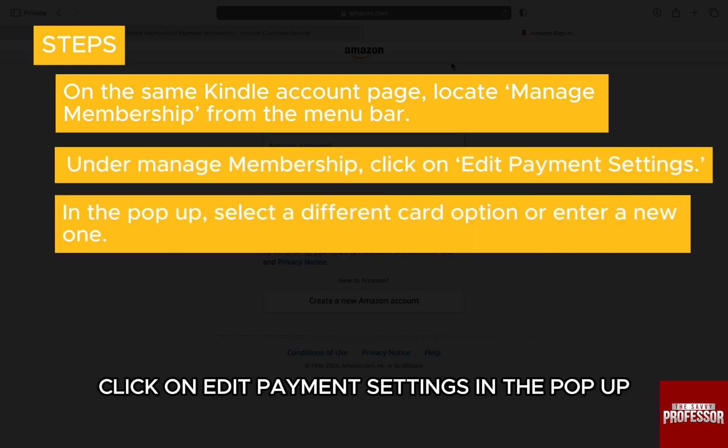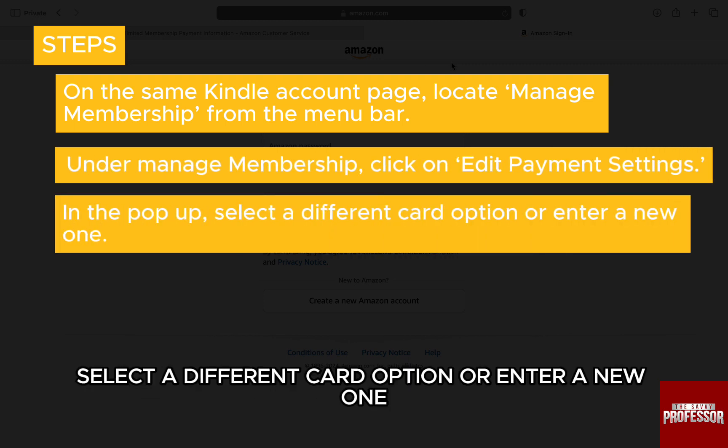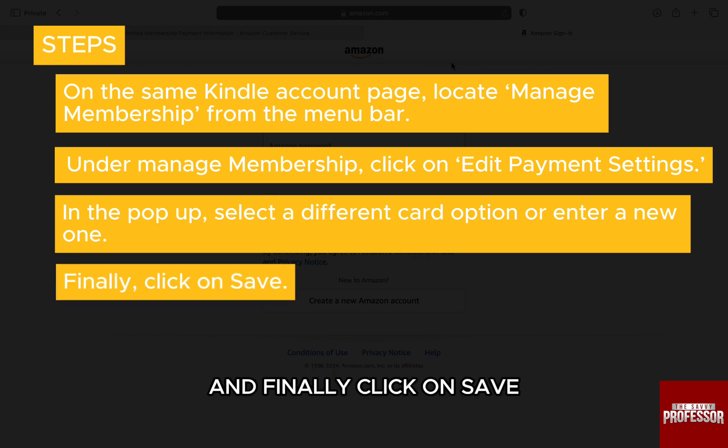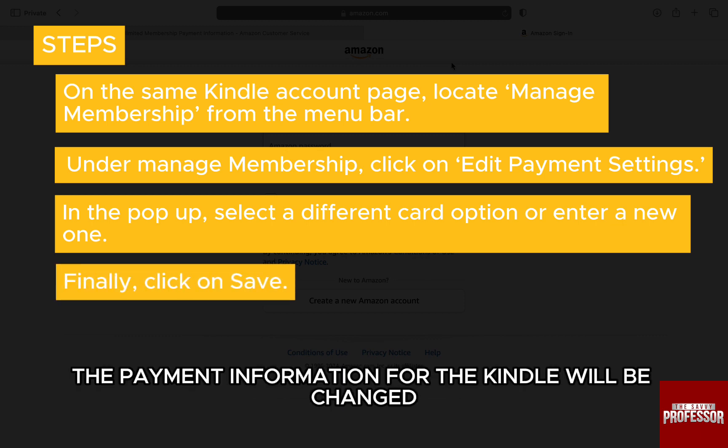In the pop-up, select a different card option or enter a new one, and finally click on Save. Once you are done, the payment information for your Kindle will be changed.